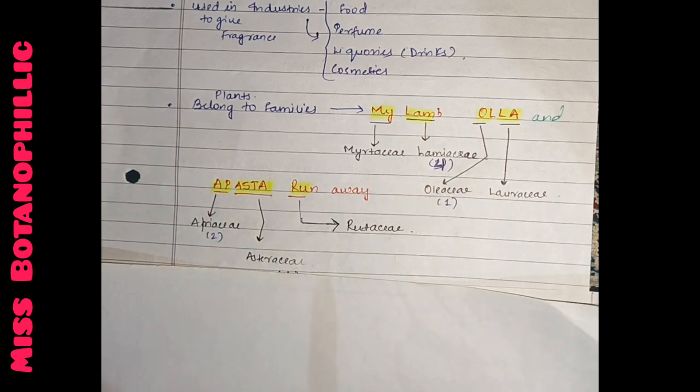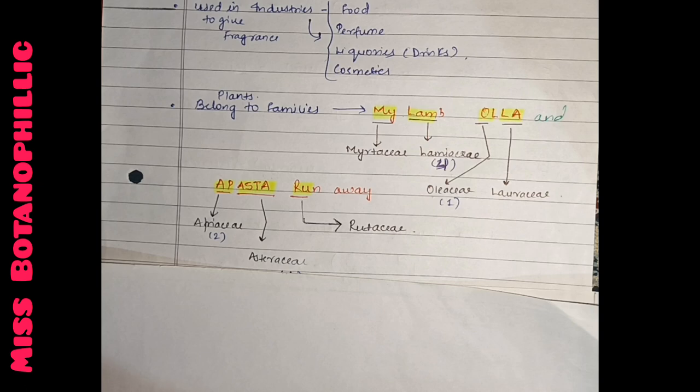Run away, so the RU word is Rutaceae. We remember approximately 7 to 8 families: Myrtaceae, Lamiaceae, Oleaceae, Loraceae, Apiaceae, Asteraceae and Rutaceae. Now we will have about 10 aromatic plants - the name, scientific name, common name, family, and which part can be used.